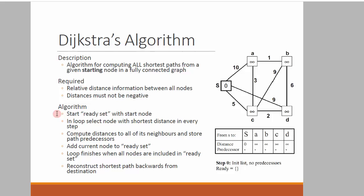How does the algorithm work? We start with a ReadySet where we add the start node into it. In the loop, we select the node with the shortest distance in every step, compute the distances to all of its neighbors, and store path predecessors. We add the current node to the ReadySet, and the loop finishes when all nodes are included in the ReadySet and none is left to explore.